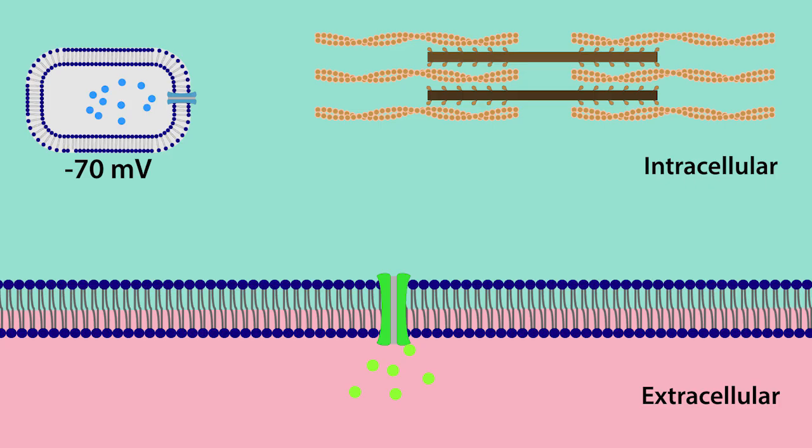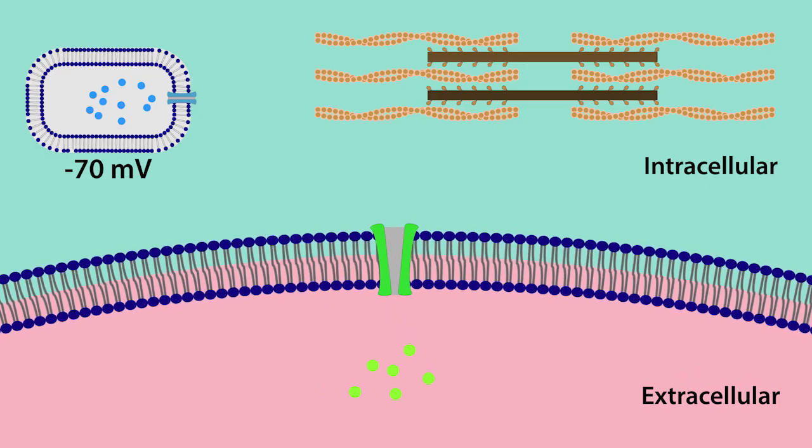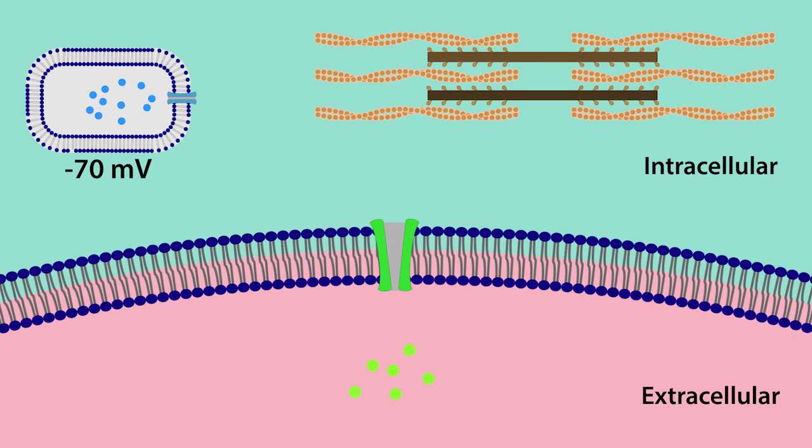Now, when blood pressure increases across the afferent arterial, it causes the membrane to stretch inward, which opens stretch-activated ion channels like the green one you see here. This particular ion channel is a stretch-activated sodium channel, and once open, it allows sodium ions to enter the cell, which depolarizes the cell.